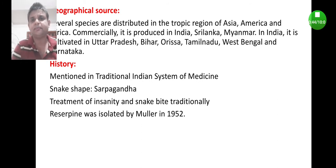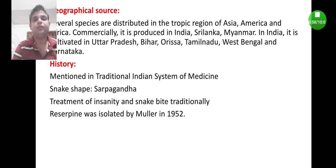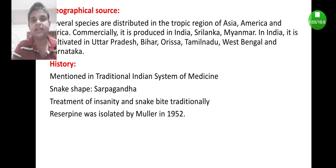In India, it is mainly cultivated in various states like Uttar Pradesh, Bihar, Orissa, Tamil Nadu, West Bengal, and Karnataka. This is in brief regarding the geographical source of Rauwolfia root.